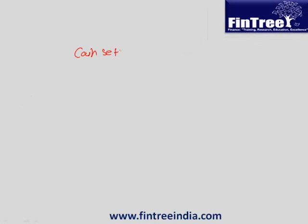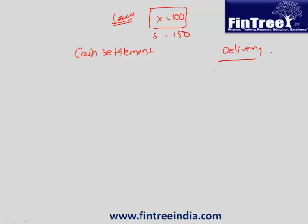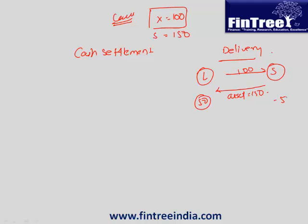There is something called cash settlement and then there is something called delivery. Think of it this way: you have a right to buy something at a price of 100 rupees and you've already paid a premium of some XYZ amount. The spot price turned out to be 150 — it's a call option. In delivery, the person who is long gives 100 to the short, and short in return gives an asset worth 150. So long could buy a 100-rupee asset at 150 and made a profit of 50. In cash settlement, short simply pays long 50 rupees — you keep your 100, take my 50, and if you want, go to the market and buy the asset. This is called cash settlement.